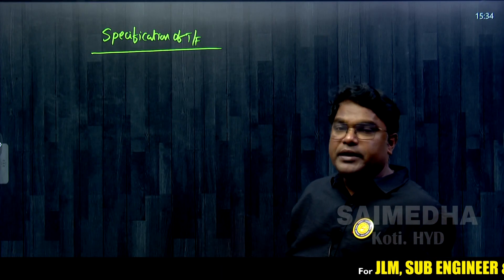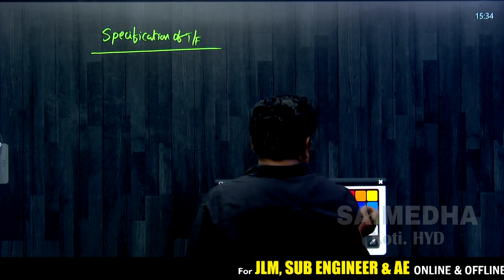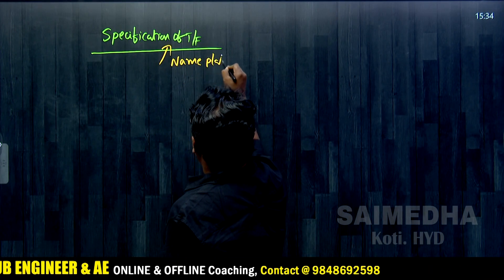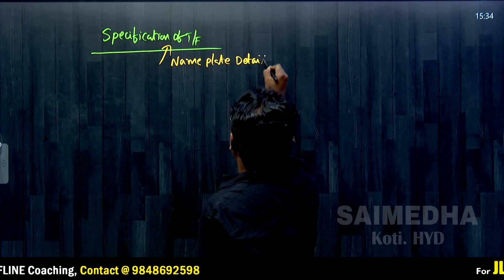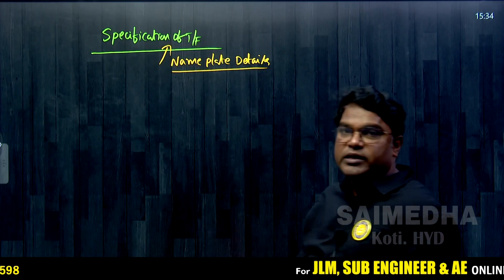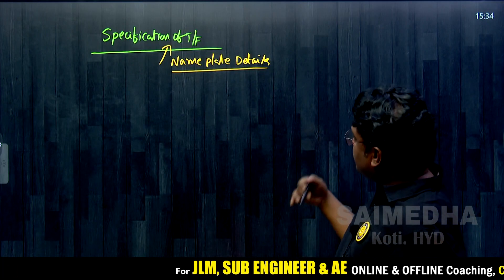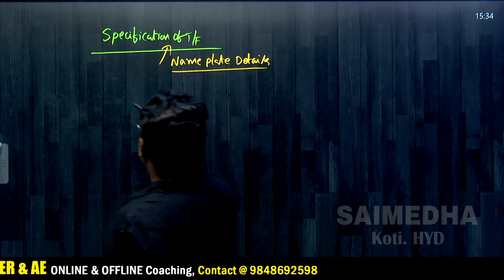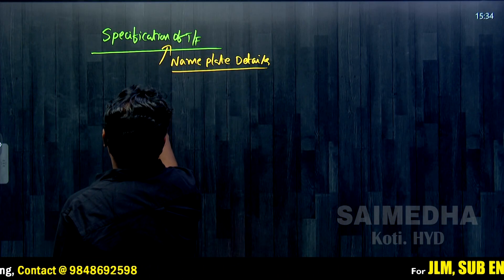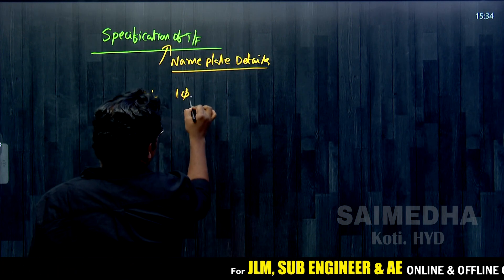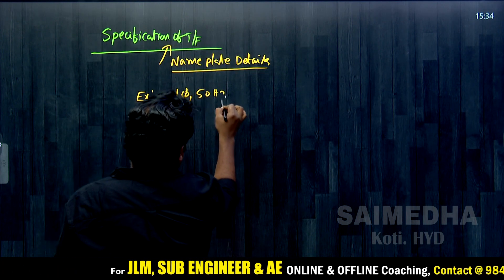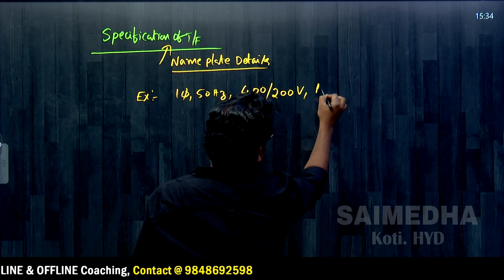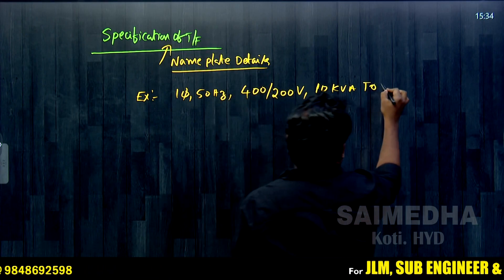Now we will look at the nameplate details of a transformer. These specifications are designed by the manufacturer during the designing of the transformer. For example, consider a single-phase transformer: 50 Hz, 400/200 volts, 10 kVA.